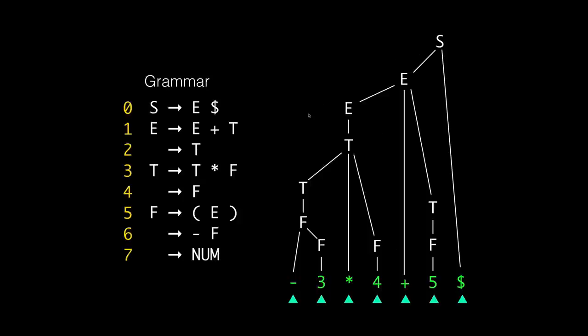You've got to keep in mind that everything is built backwards like this. We create actions associated with each production, and each time a reduction is performed for that production, we fire the corresponding action, which in this case is just going to be some C code.